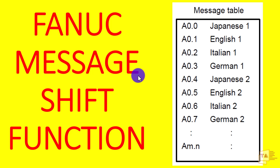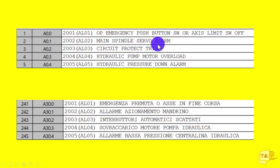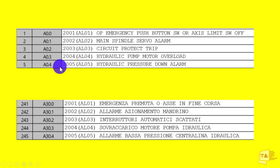Let me explain how we can do this. This is one example — in the same machine I'm writing messages like this one and this one. This is in English and this is Italian. A0.0 is about OP emergency push button and access limit off switch. A0.1 is about main spindle alarm. A0.2 is for circuit productivity. A30.0 is in Italian but carries the same message as A0.0. So when an alarm goes up in the machine, the alarm will be displayed in Italian or English, which we can choose in our settings.